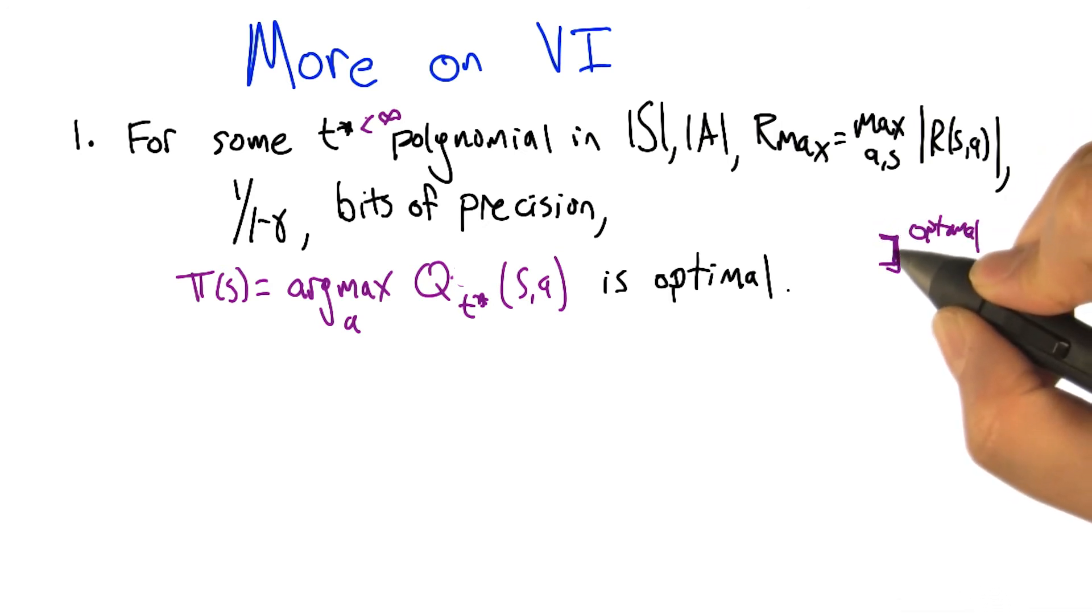So it can't get arbitrarily close to optimal. It's going to be some distance away. And what that gives us is that when we run value iteration enough, eventually the distance between the best action and the second best action gets bigger than that gap. Once it's bigger than that gap, the greedy policy is going to be optimal. It's going to choose the actual optimal action in all states.